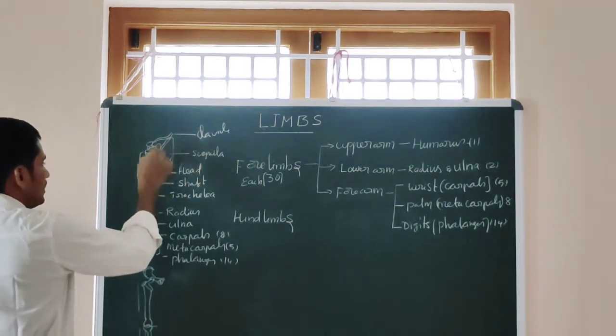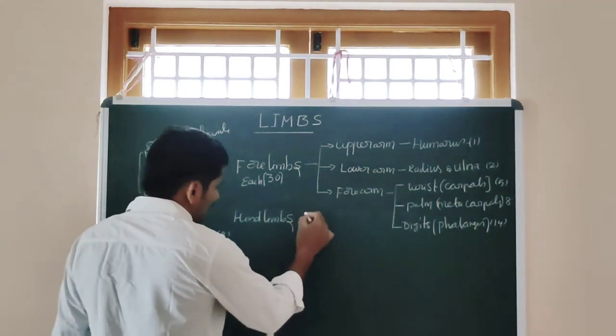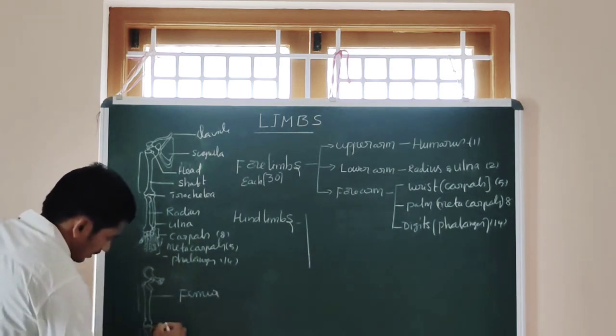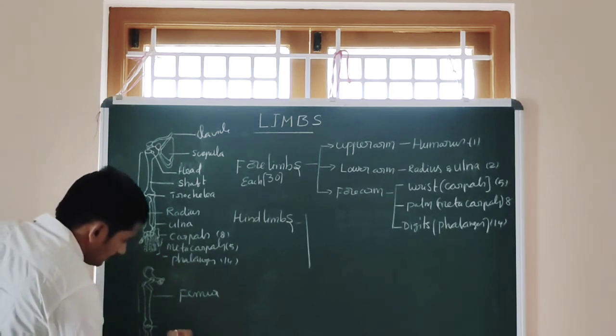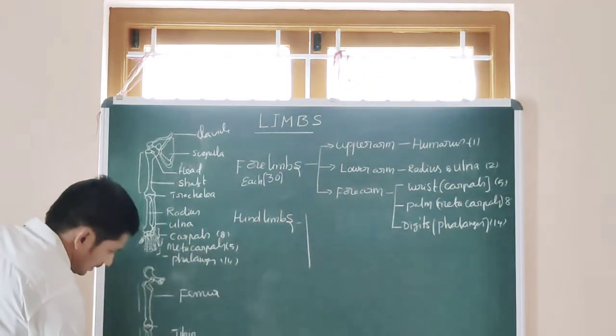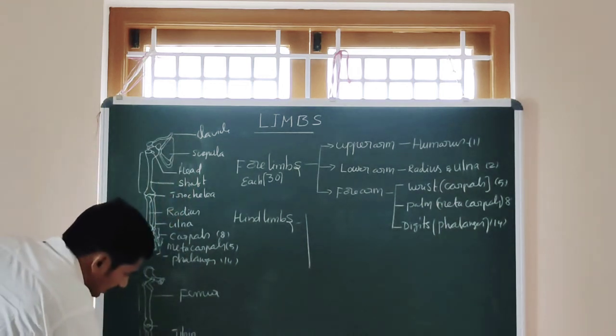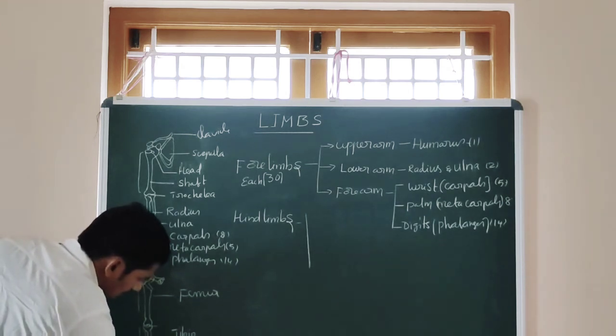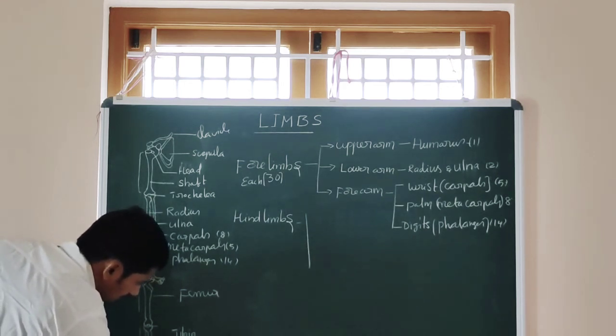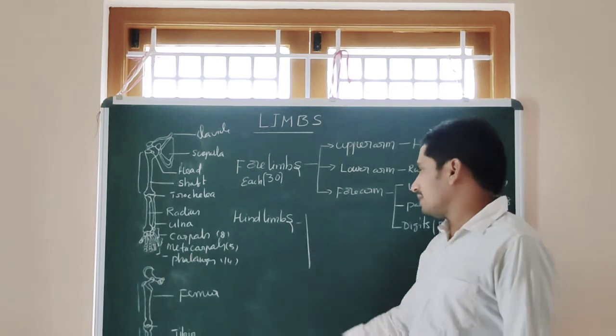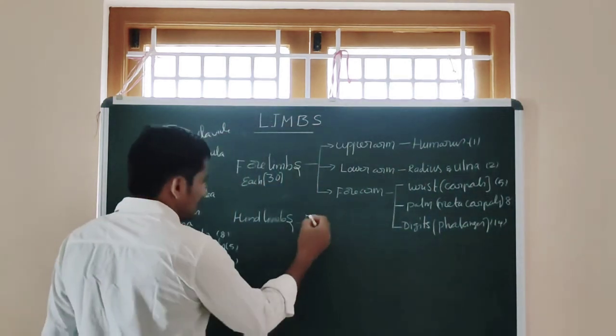Next, go for the hindlimb. Hindlimb consists of - see in the diagram - this is the femur, these are the two bones, one is tibia and fibula, and these are the ankle we call the tarsal area, tarsals and metatarsals. Femur is the longest bone which we call the thigh bone.